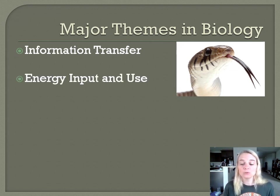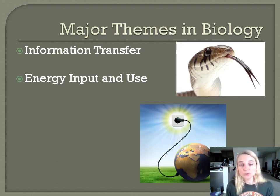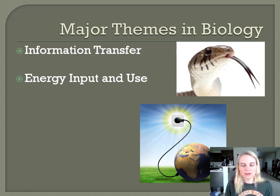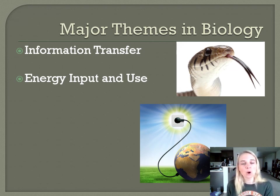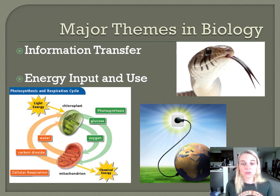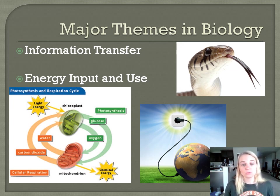The next theme is energy input and use. All living things have to utilize energy, and for the most part that energy comes from the sun — the ultimate source of energy for about ninety-nine percent of all living things on this planet. There are exceptions, like chemosynthetic bacteria in deep-sea hydrothermal vents that use chemicals as their energy source, but that's a very small percentage. We'll look at chemical reactions that allow organisms to use energy — for example, chloroplasts in plants take the sun's energy to produce sugar and oxygen, and mitochondria in all cells take that sugar and oxygen to produce energy the cell can use.